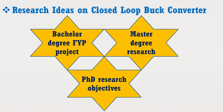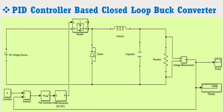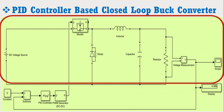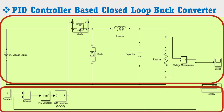Look at the figure which shows the block diagram of the closed loop boost converter. It may be noted that the highlighted portion is similar to the open loop boost converter model. It means we have to design the bottom circuit to convert this open loop boost converter into a closed loop boost converter model.